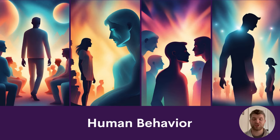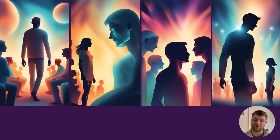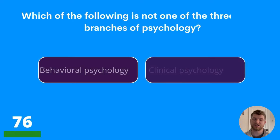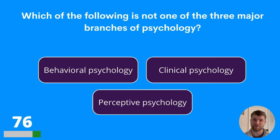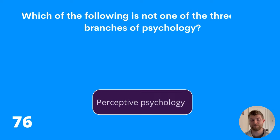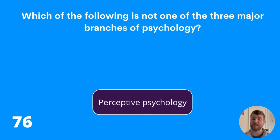We're now going to move on to some questions all about human behaviour — 15 questions on this topic. Question seventy-six: which of the following is not one of the three major branches of psychology? Behavioural psychology, clinical psychology, or perceptive psychology? The answer is perceptive psychology.